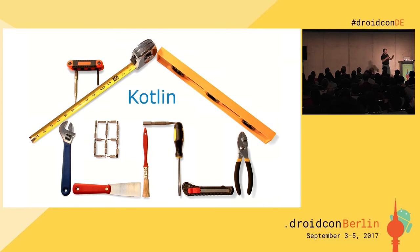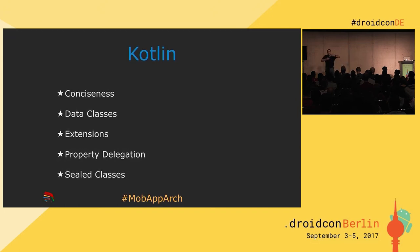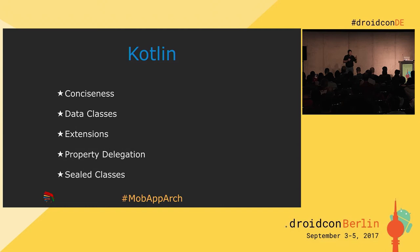If this is what we agree could be the basic blueprint for an architecture, how does Kotlin help? Kotlin brings several things to the table, and I'm not going to cover all of them. I want to cover: conciseness, data classes, extensions, property delegation, and finally some hints about sealed classes.